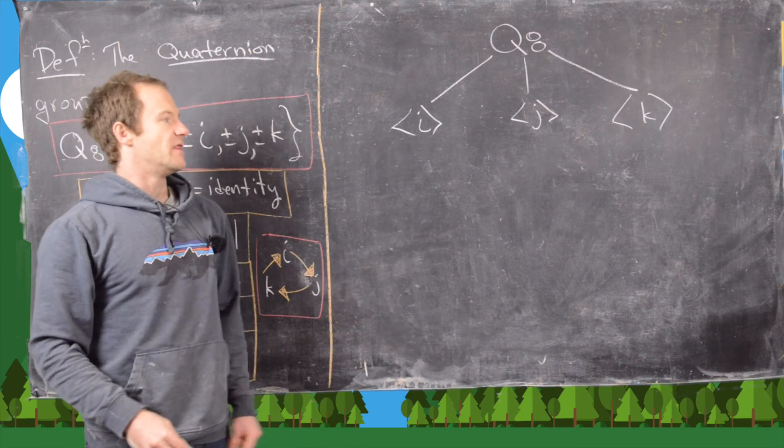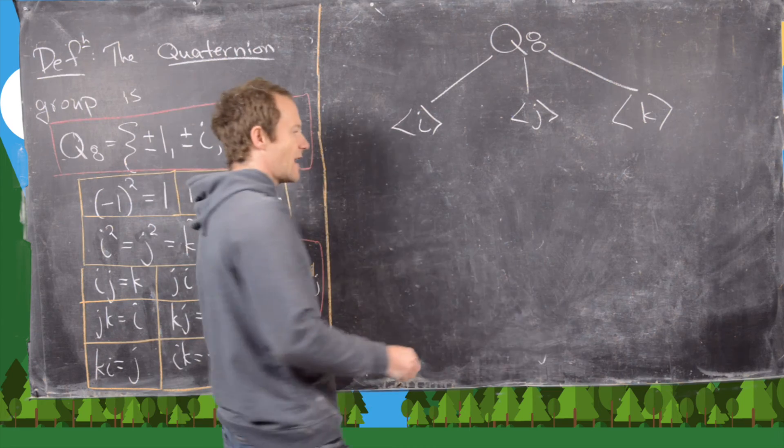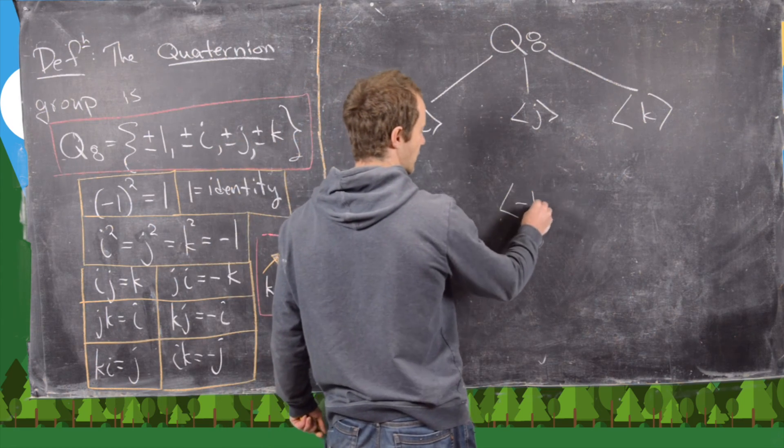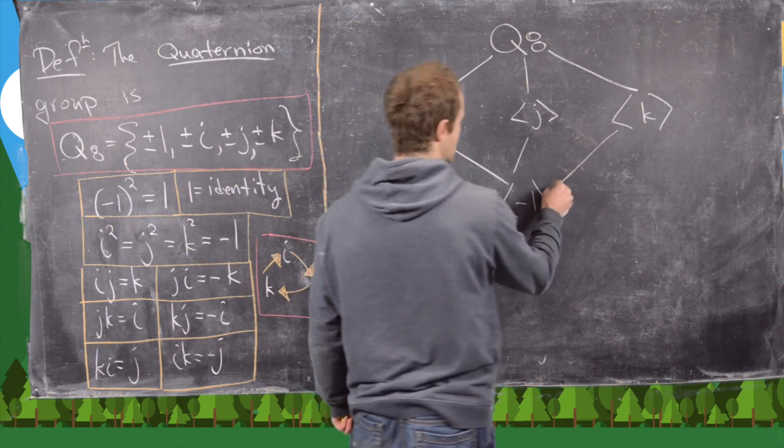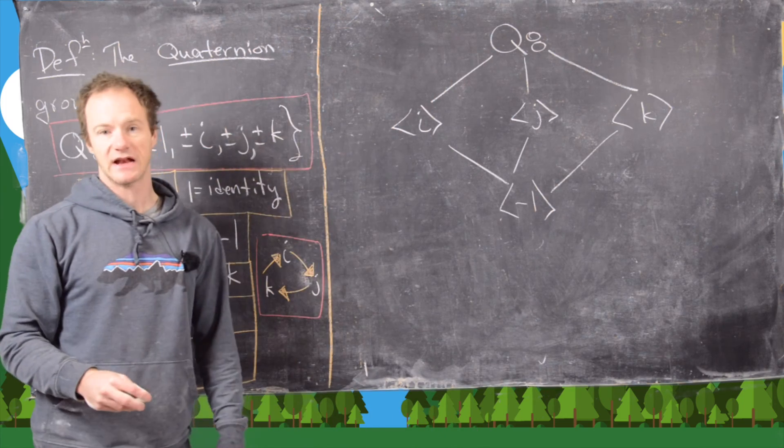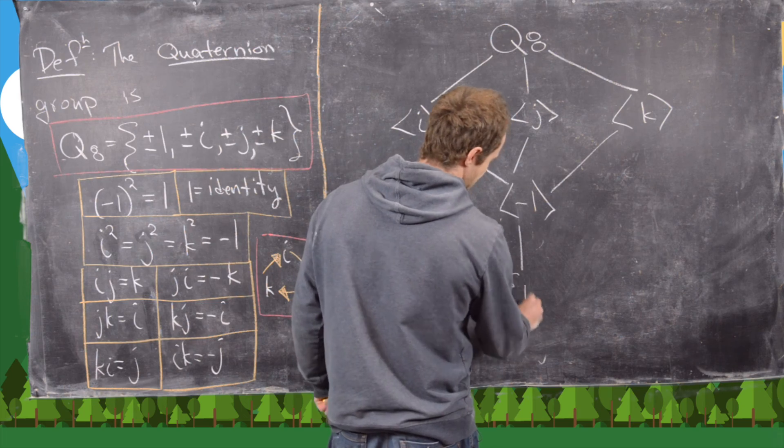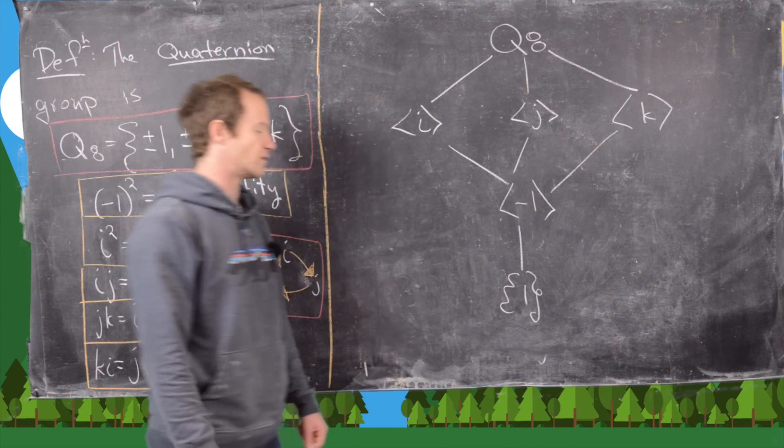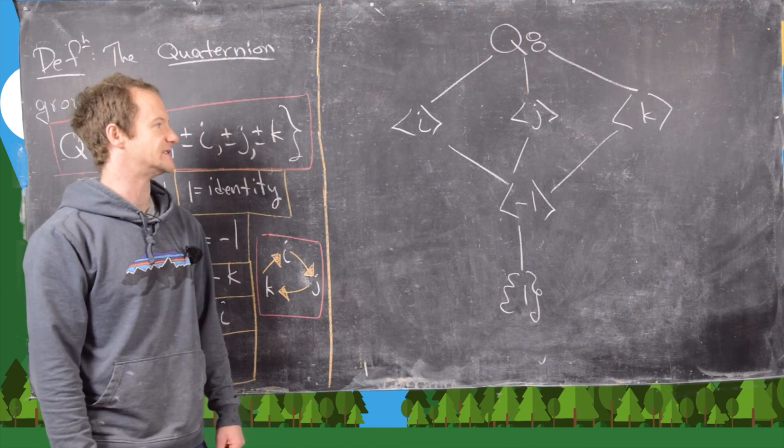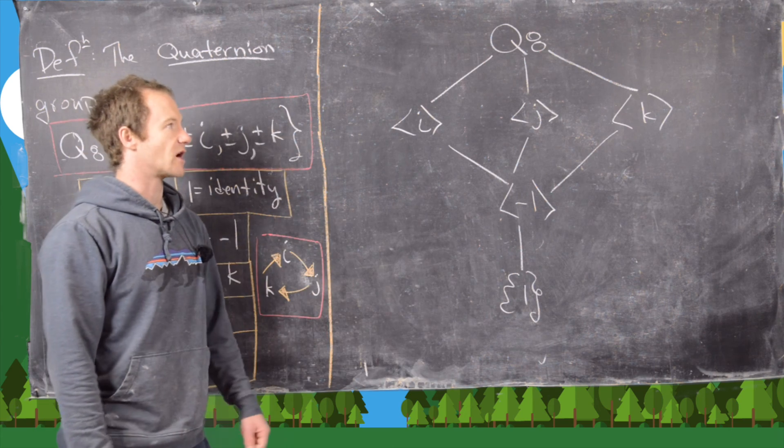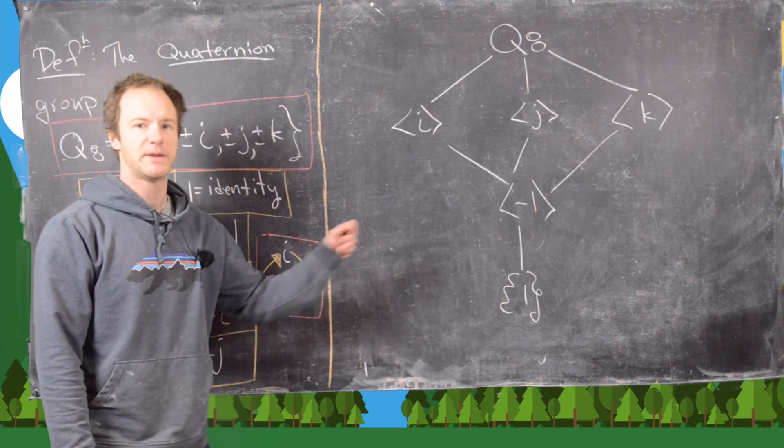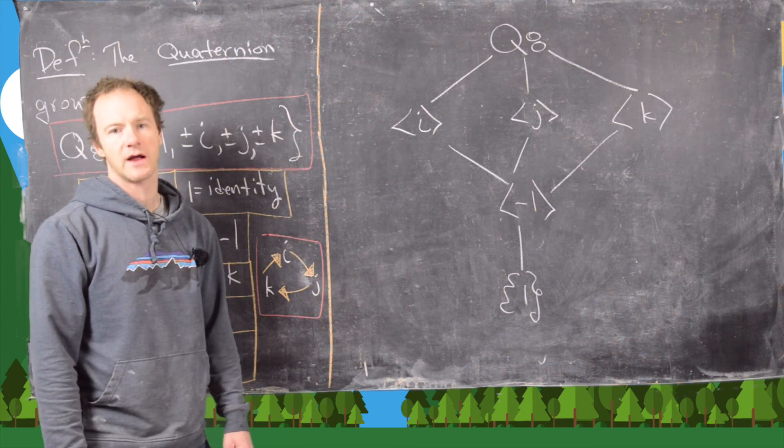But the only thing that they shared in common were 1 and negative 1, but recall that that was exactly the cyclic subgroup generated by negative 1. And then below that is just the trivial subgroup itself, which is the subgroup that only contains the identity. So this is our subgroup lattice for q8, a picture of q8, if you will. All right, this is a good place to stop.